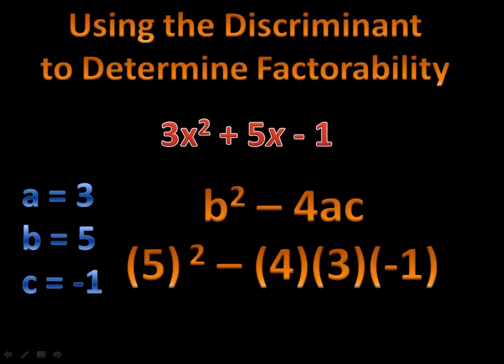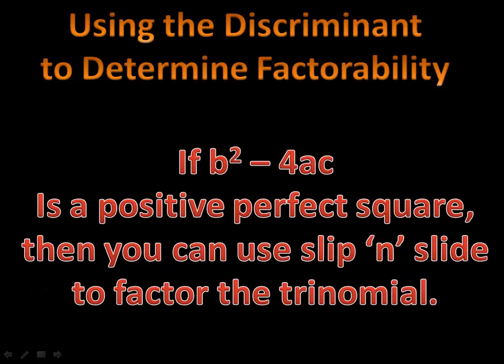Here's what I'm hoping to find out. If b squared minus 4ac — when I put those numbers in — if the result is a positive perfect square, like 36, 25, 9, 1, or 0, any positive perfect square, then you can use slip and slide. If the result is not a positive perfect square — anything negative or anything that's not a perfect square — slip and slide is not going to work.